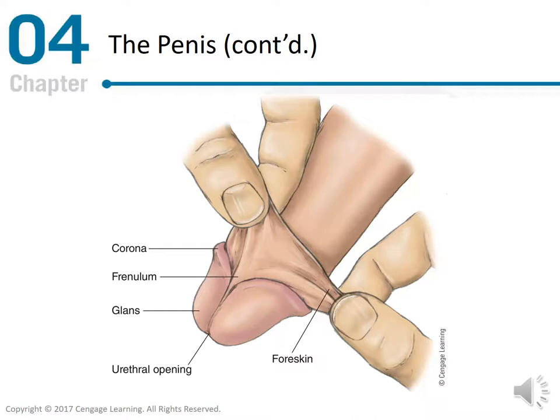The penis, continued. Below you see figure 4.2, the underside of the uncircumcised penis, showing the location of the corona and the frenulum — two areas of the penis that harbor a high concentration of sensitive nerve endings.